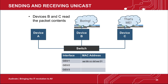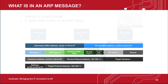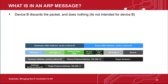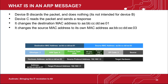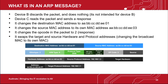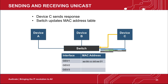Devices B and C read the packet contents. Device B drops the packet and does nothing. Device C reads the packet, adds the information to its ARP table, and sends a response. It changes the destination MAC address to AA:BB:CC:DD:EE:01, changes the source MAC address to its own MAC address, changes the opcode in the packet to 2, and swaps the target and source hardware and protocol addresses.